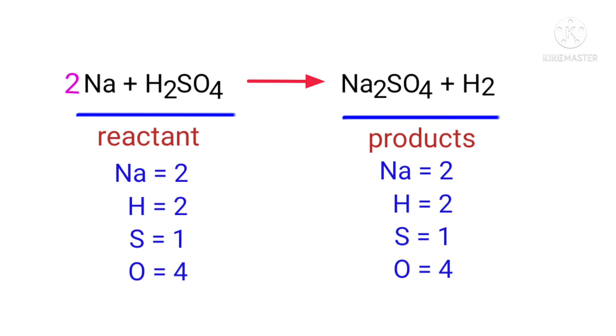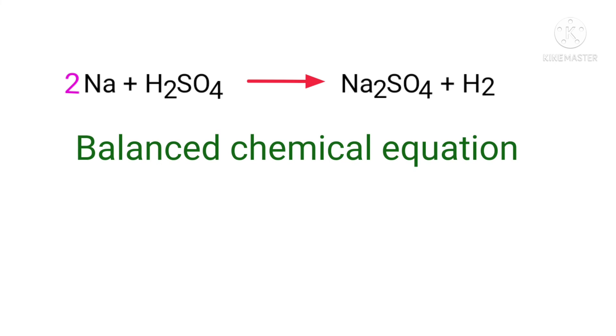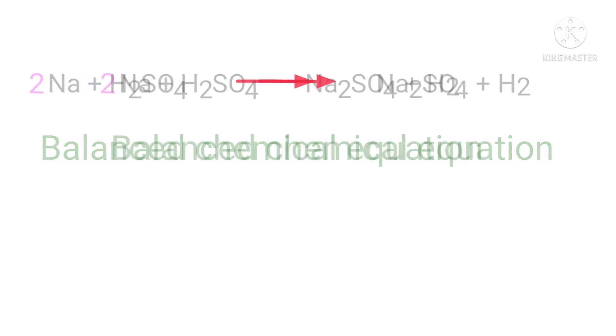The equation is now balanced. There are two sodium atoms, two hydrogen atoms, one sulfur atom and four oxygen atoms on both sides.